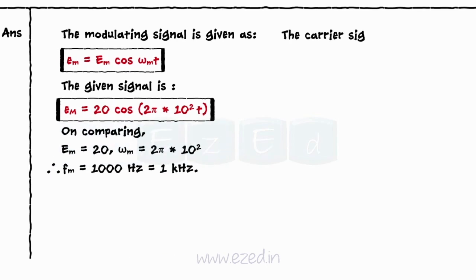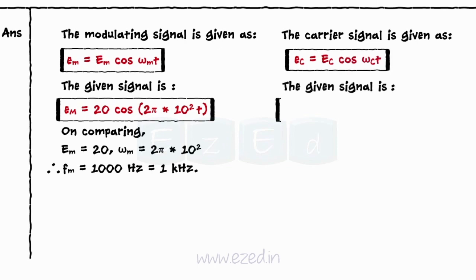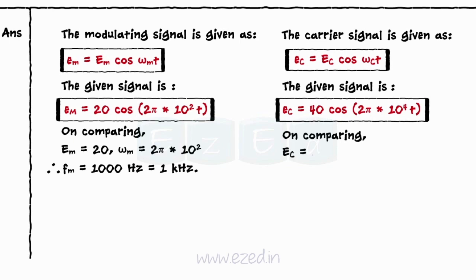The standard equation of carrier signal is Ec = Ec cos(ωc t). The given equation is Ec = 40 cos(2π × 10⁴ t). On comparing the two equations, we get Ec = 40, ωc = 2π × 10⁴, thus fc = 10,000 Hz = 10 kHz.